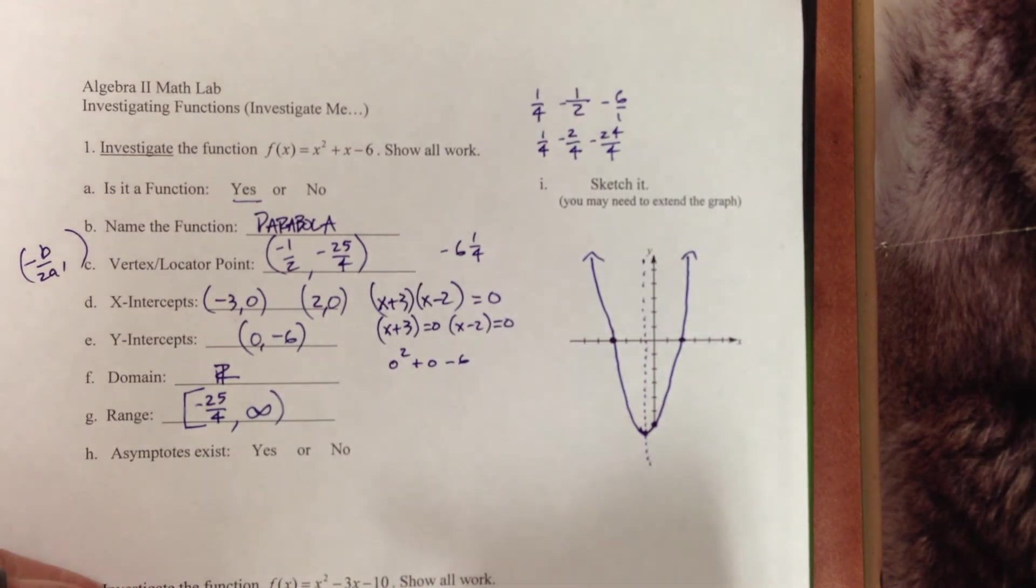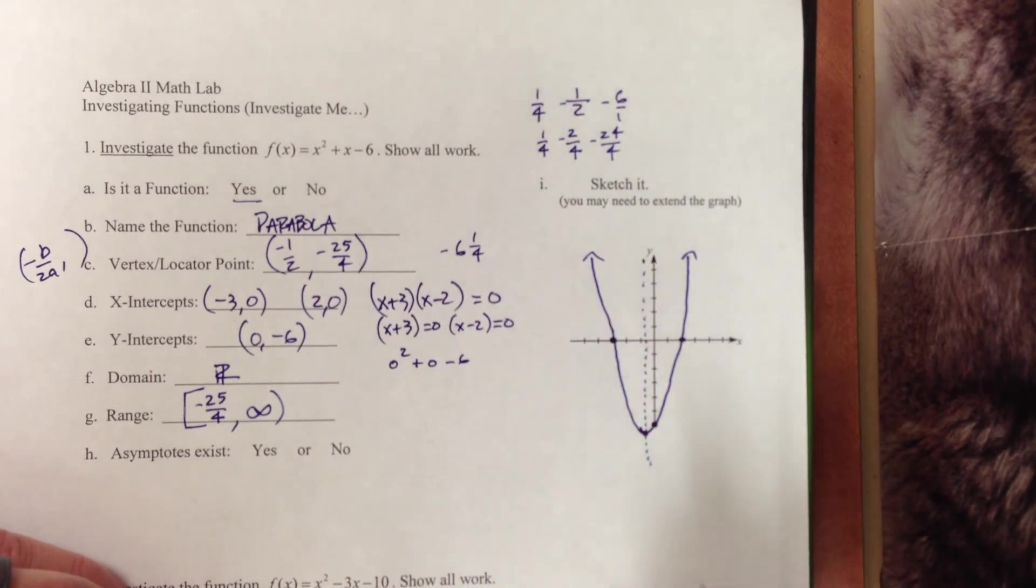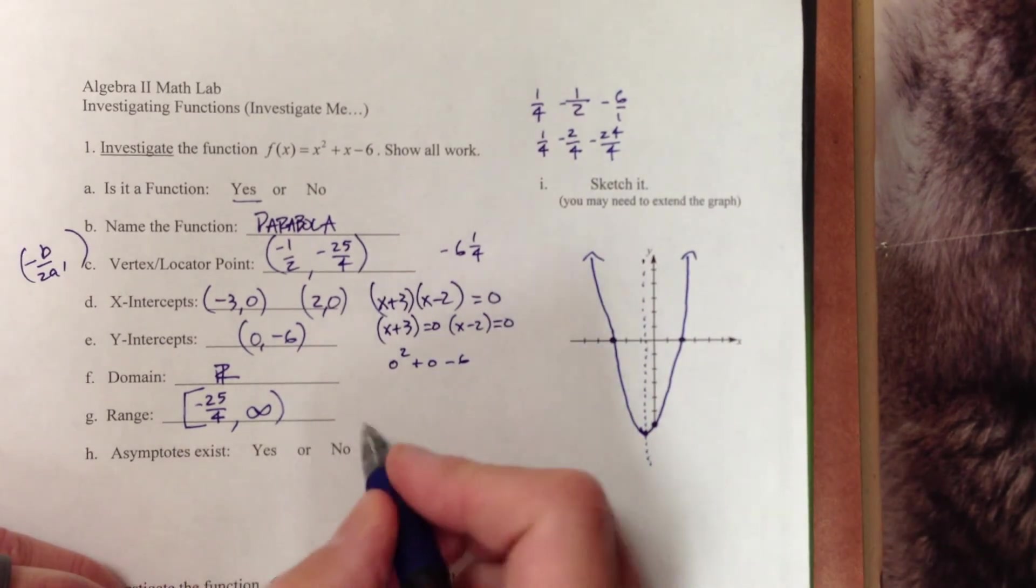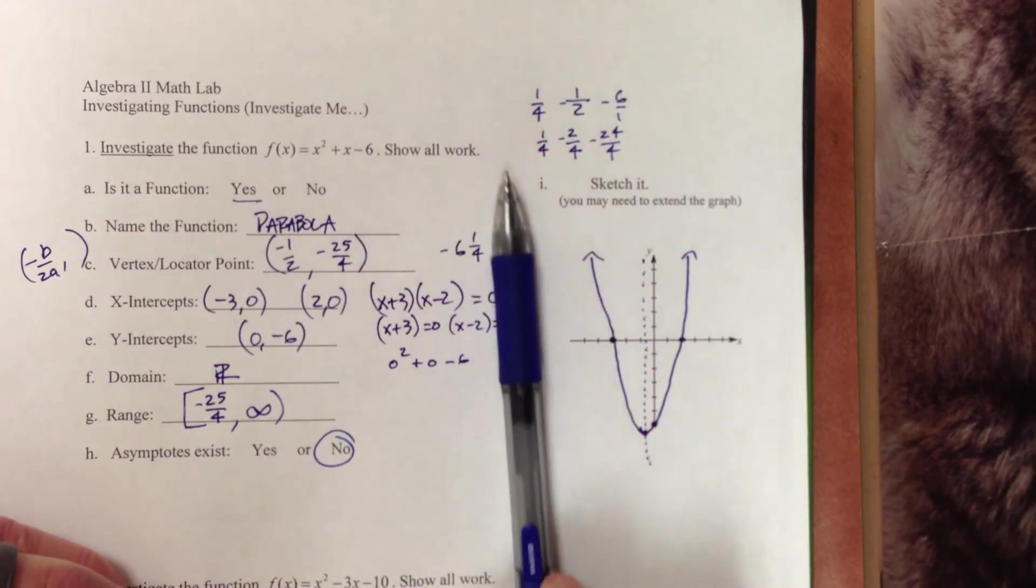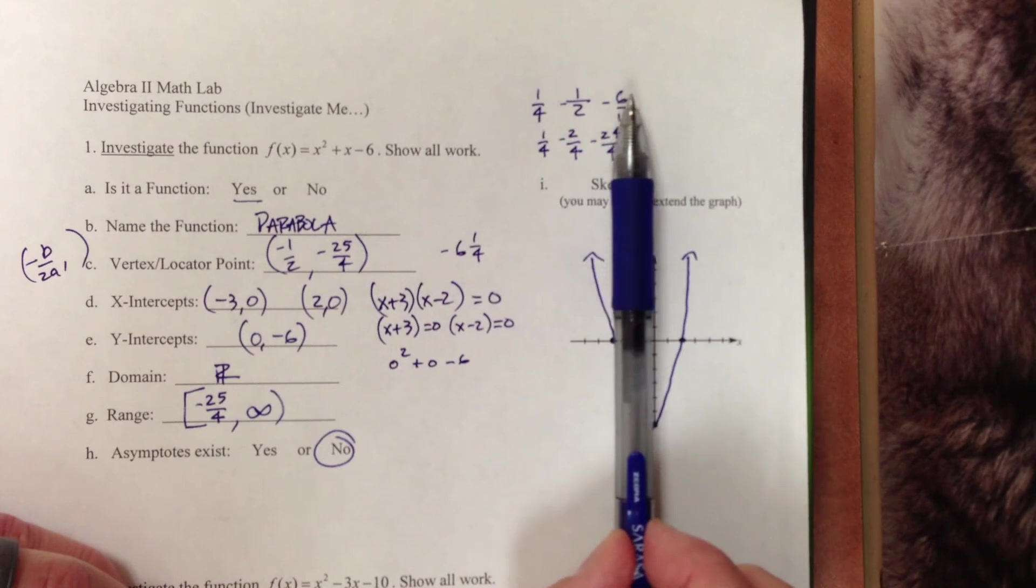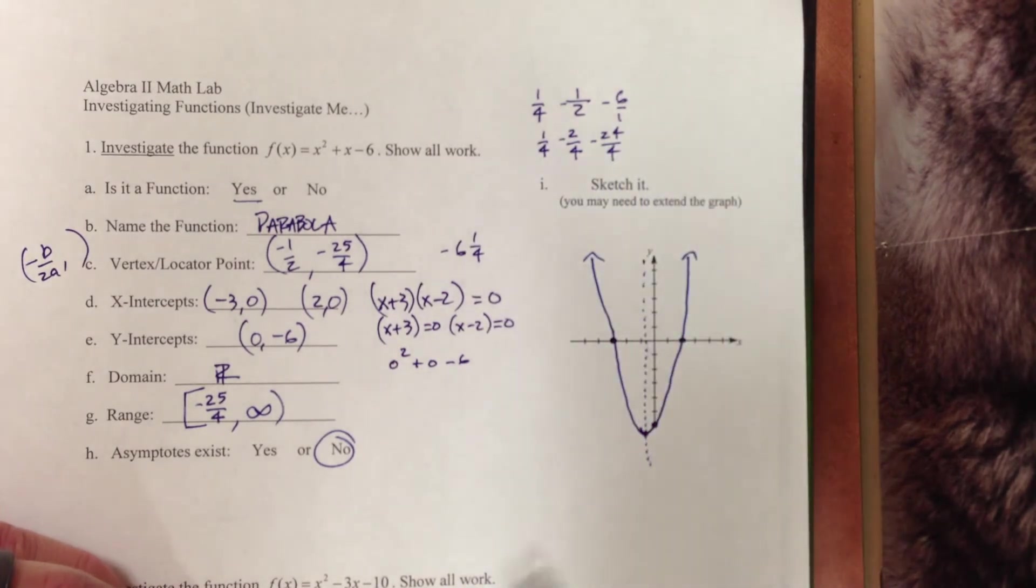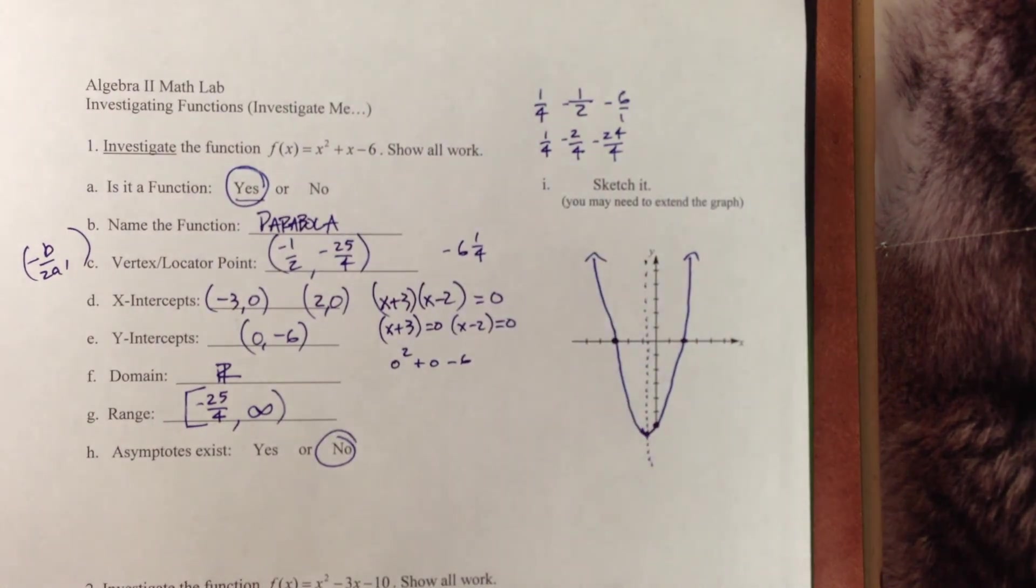Do I have asymptotes, spots in the graph that do not exist? I do not see any here. Everything that I can potentially think of to plug in for x should give us a value coming out. Do asymptotes exist? No. Is it a function? Back to that vertical line test that we talked about. Does a vertical line hit my graph two spots anywhere? And as you can see as I slide across, it only hits once. Is it a function? Yes, it is.